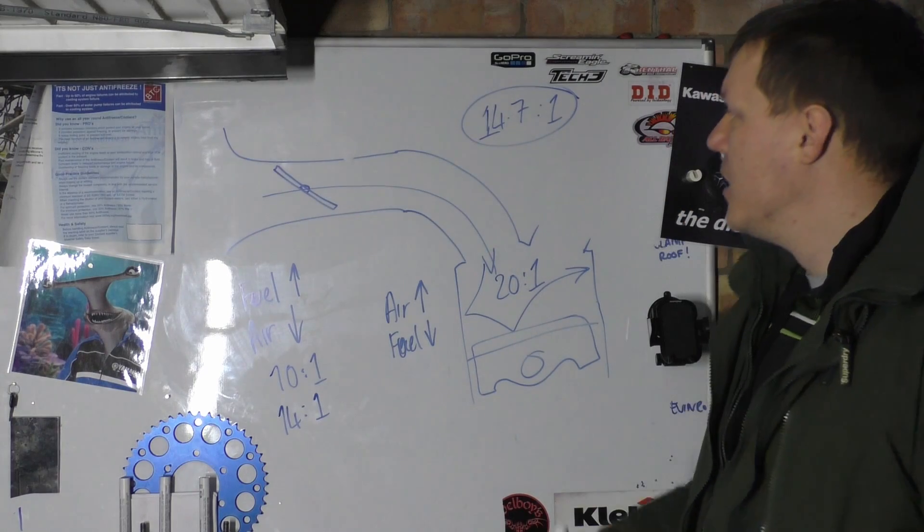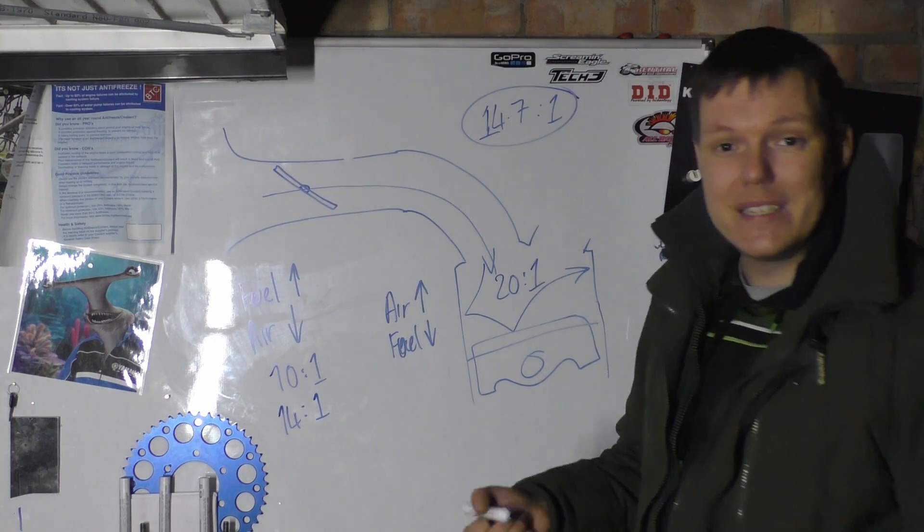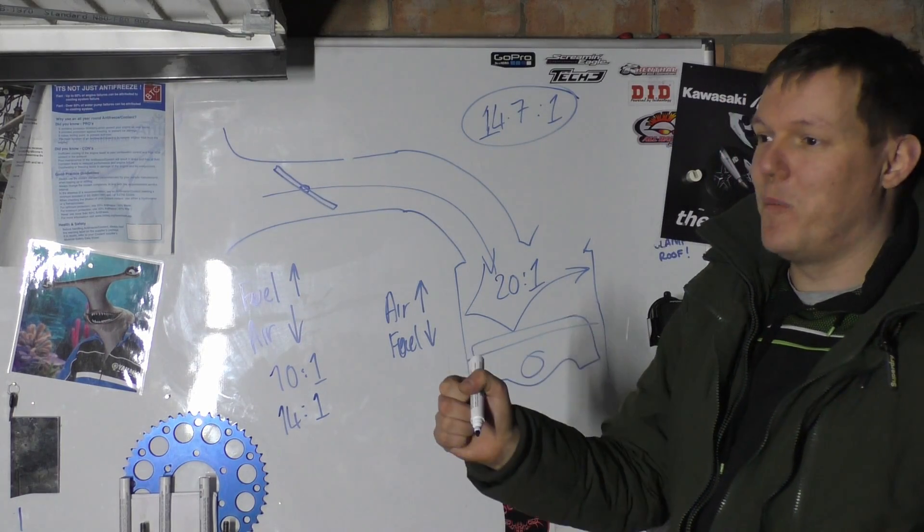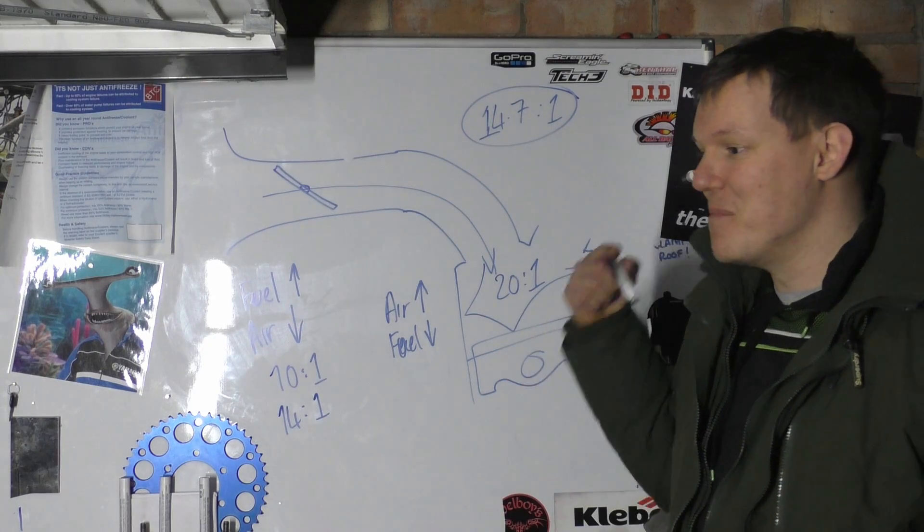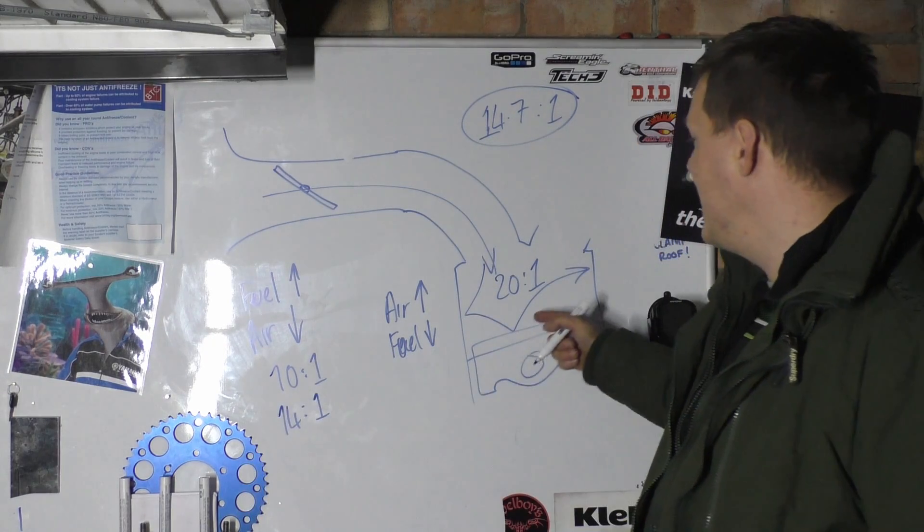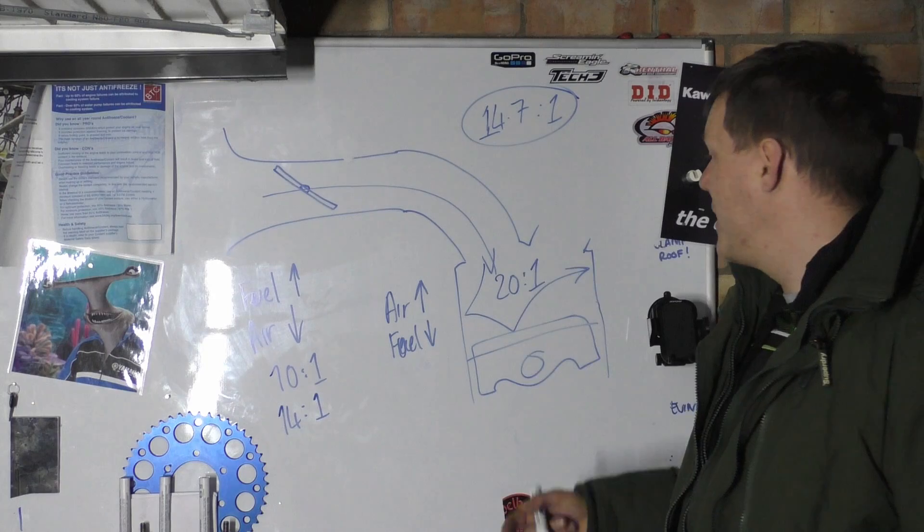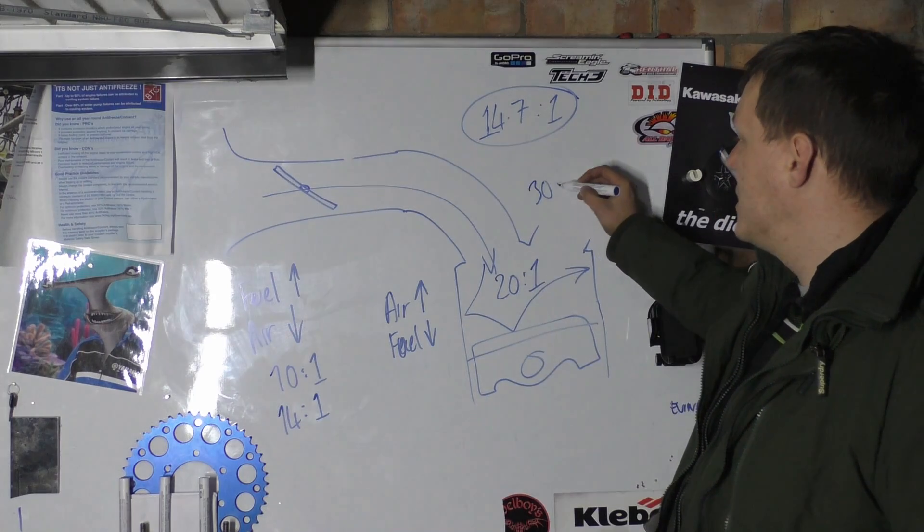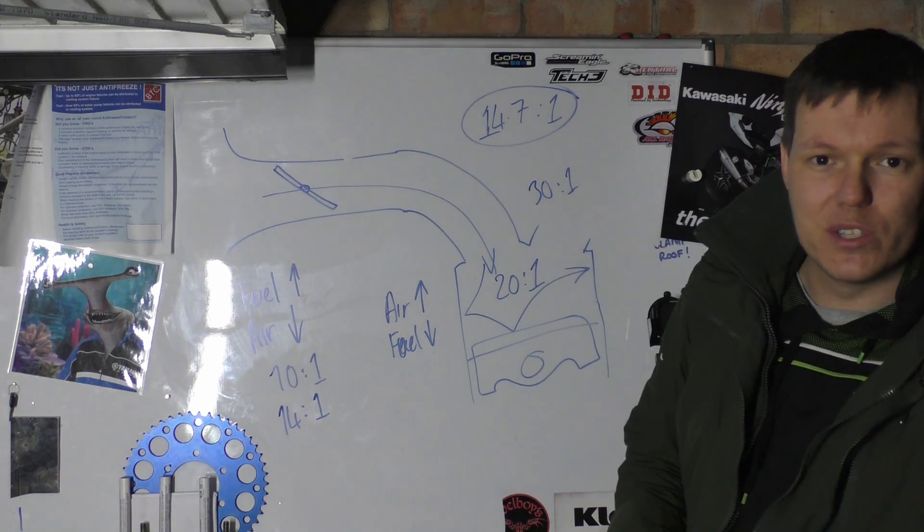When you open your throttle, why is that different? It's because when you open your throttle, you're actually allowing more air to get in, so you're leaning it out even further. You get to like 30 to 1 or something, and that's why it doesn't help.